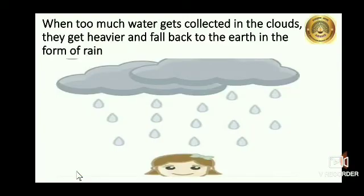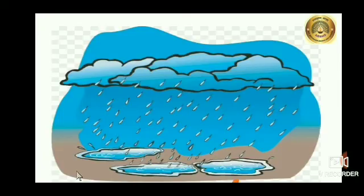When too much water gets collected in the clouds, they get heavier and fall back to the earth in the form of water. Children, clouds are made up of tiny water droplets. When condensation happens in the sky, clouds form and grow. The droplets come together and form even bigger drops. When the drops get heavy, they fall down to the ground.